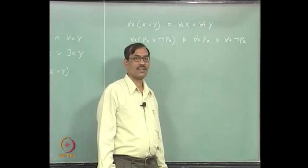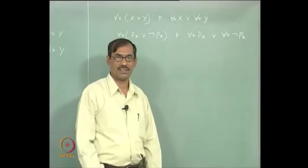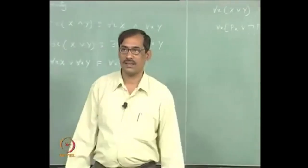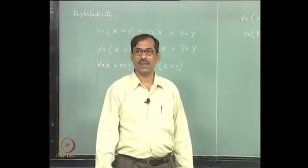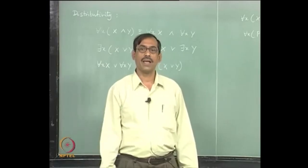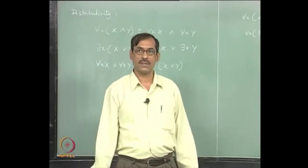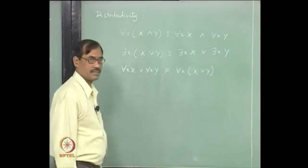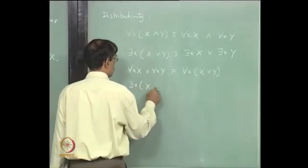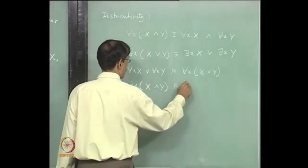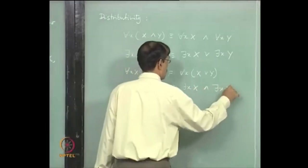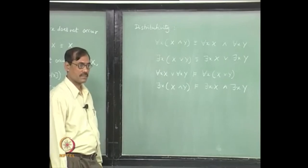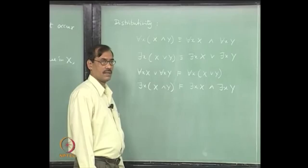It says either every natural number is a prime number — which is false — or every natural number is a non-prime number — which is also false because 2 is a prime number. So this does not hold, but this entailment holds. We have only one side here: entailment. Similarly, for the existential quantifier we will have an entailment, but the converse may not hold again.